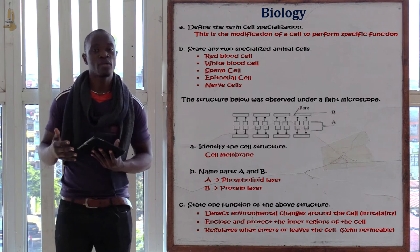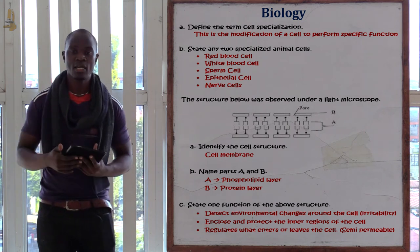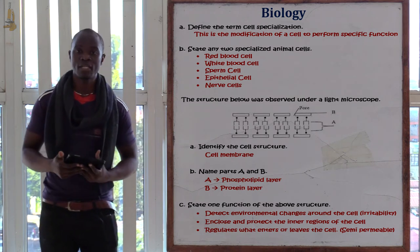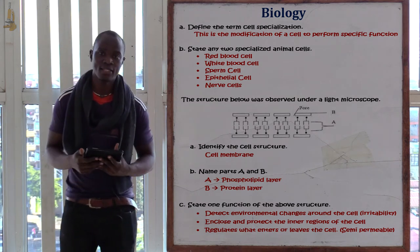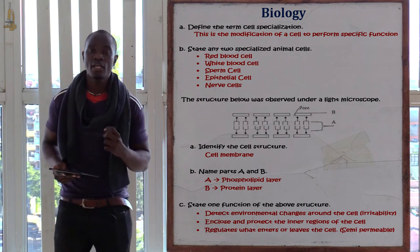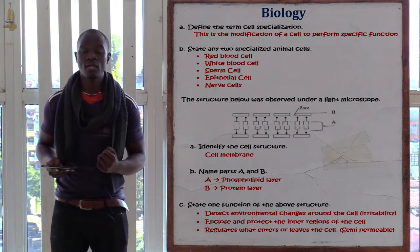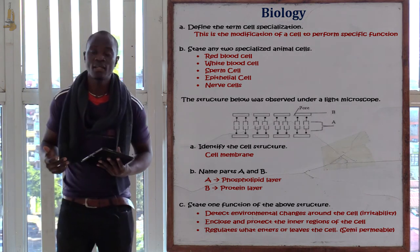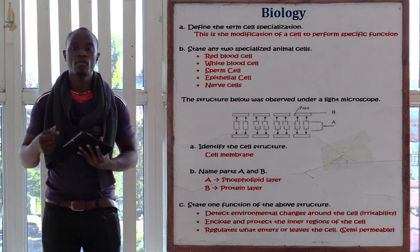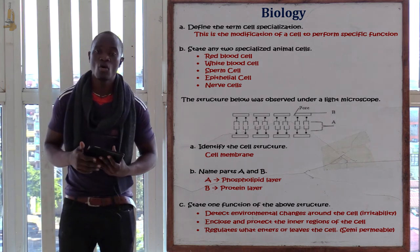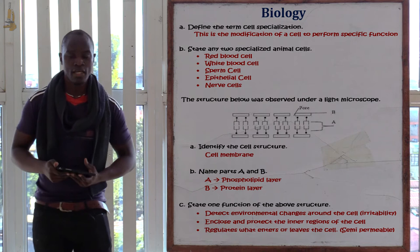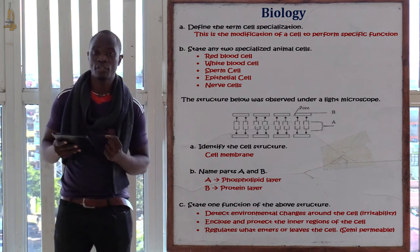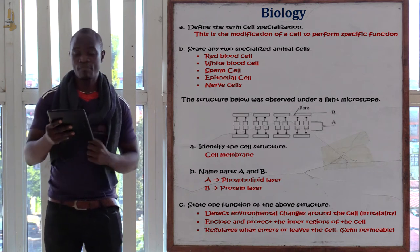The nerve cell is used for irritability — the ability of an organism to detect and respond to environmental stimuli. The red blood cell transports oxygen or dissolved gases. The white blood cell fights harmful microorganisms and protects the body from infections.